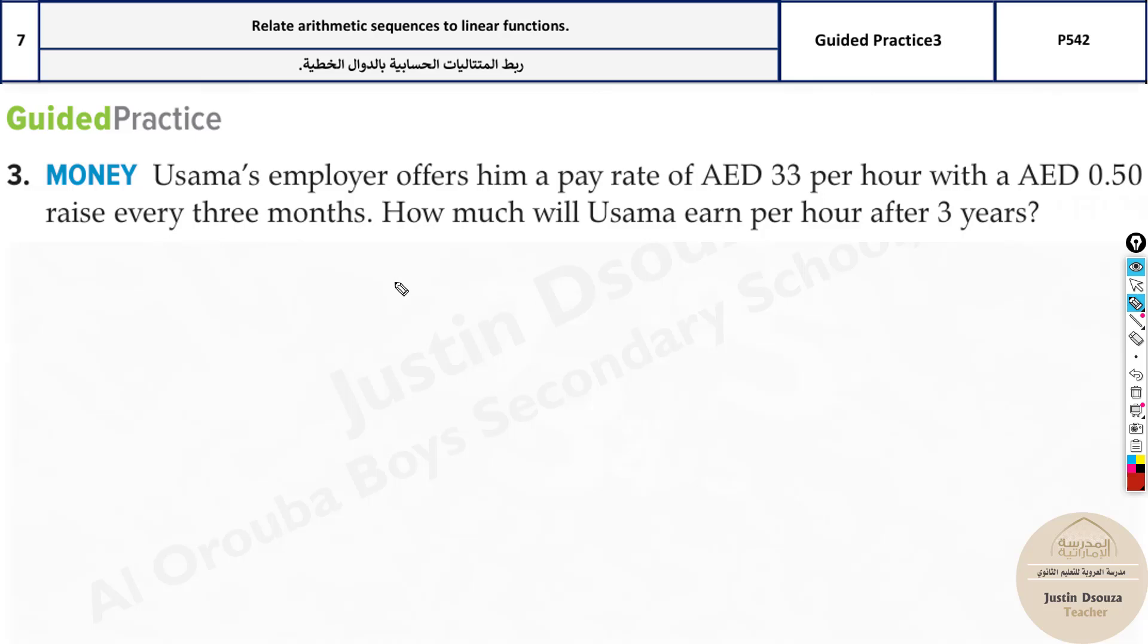Now here, what do you think is this term 1? They have told a lot of things. This is what it is increasing every 3 months. So d is 0.5.